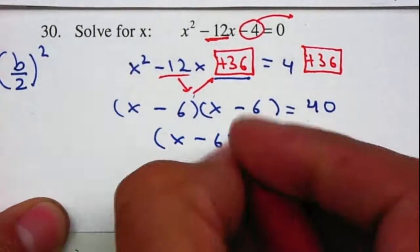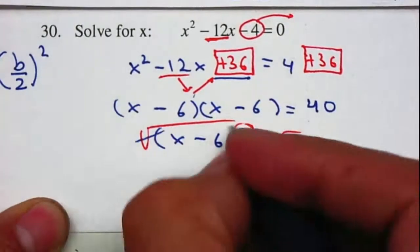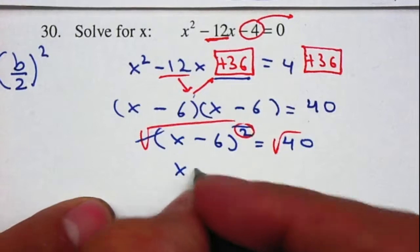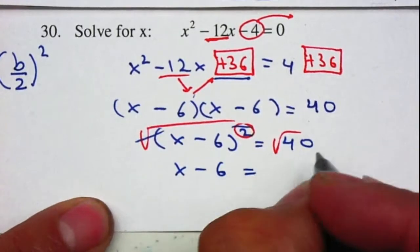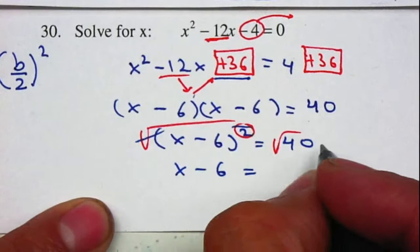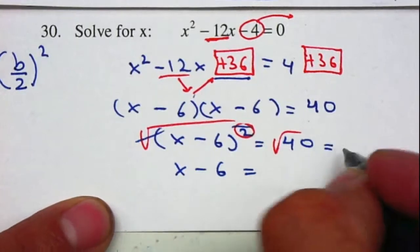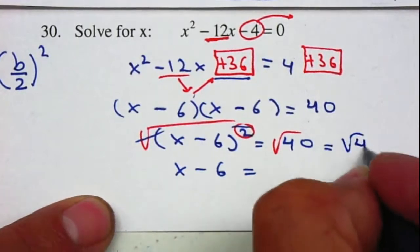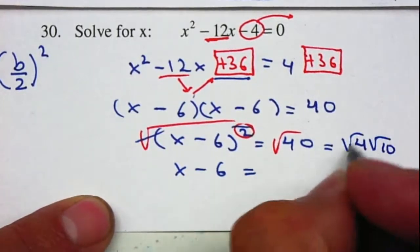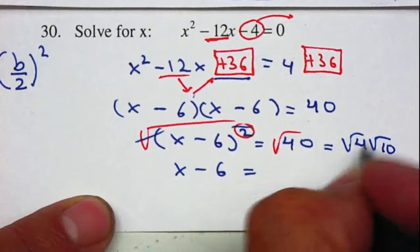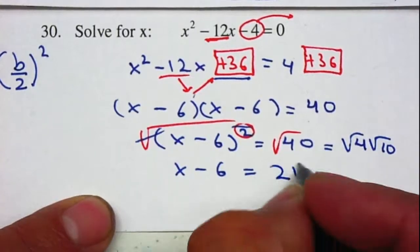I'll get rid of the square by taking the square root on both sides. The square root and square cancel, so x - 6 equals the square root of 40. I'll simplify the square root of 40 by looking for perfect squares that divide 40, which is 4 times 10. Since the square root of 4 is 2, I get 2√10.